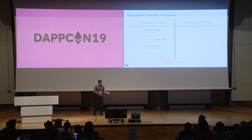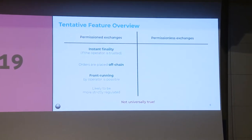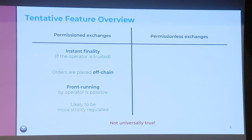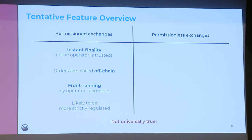Let's look at the tentative features these exchanges offer. Permissioned exchanges have two powerful features. First, instant finality: if you trust your operator, you can get instant finality because he will send and settle orders on the Ethereum chain in the intended order, allowing you to trade elsewhere based on that information. Second, all orders can be placed off-chain, making order adjustments very cheap. But there is always some trust involved — the operator could front-run — and these exchanges are likely to be more strictly regulated.